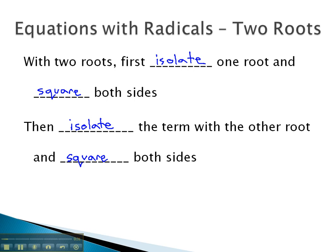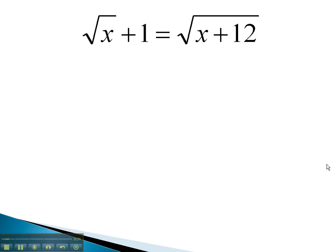In other words, we're solving one root at a time. For example, in this problem, we already have a root isolated. This root is already to be cleared. We get rid of that root by squaring both sides. On the left side, when we square, we must square the first term. Squaring a square root will just give the inside.